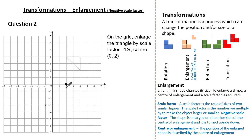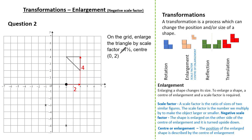For the next vertex, from the centre of enlargement we have gone four squares up. With a scale factor of minus one and a half, we do the opposite and multiply by one and a half: the opposite of four up gives us six down. That is my new vertex. My last vertex from the centre is two to the right and four up. The negative means we do the opposite and multiply by one and a half, giving us three to the left and six down. This is my new vertex.